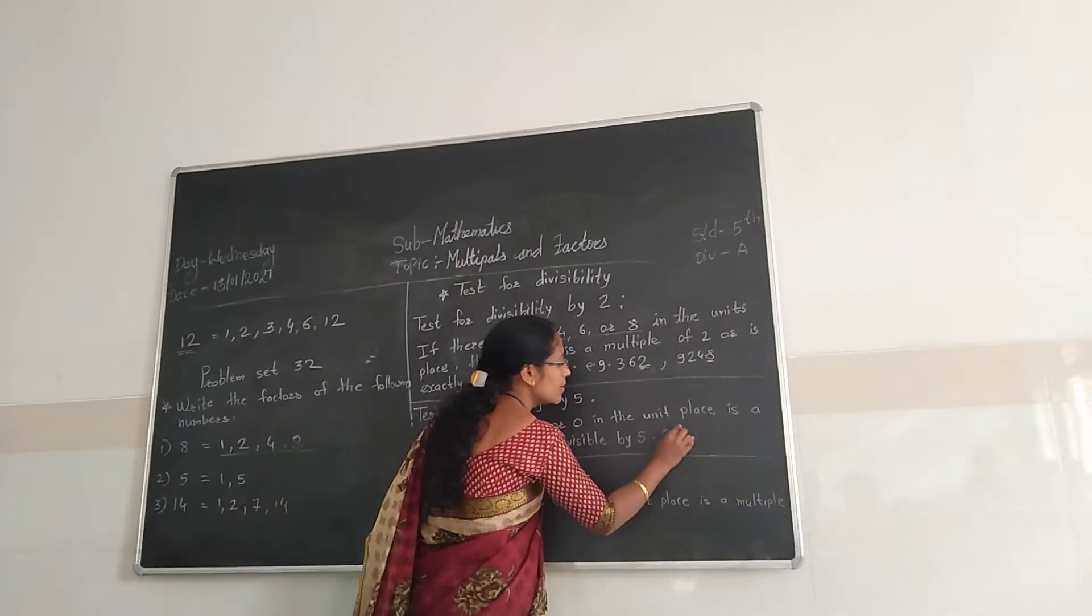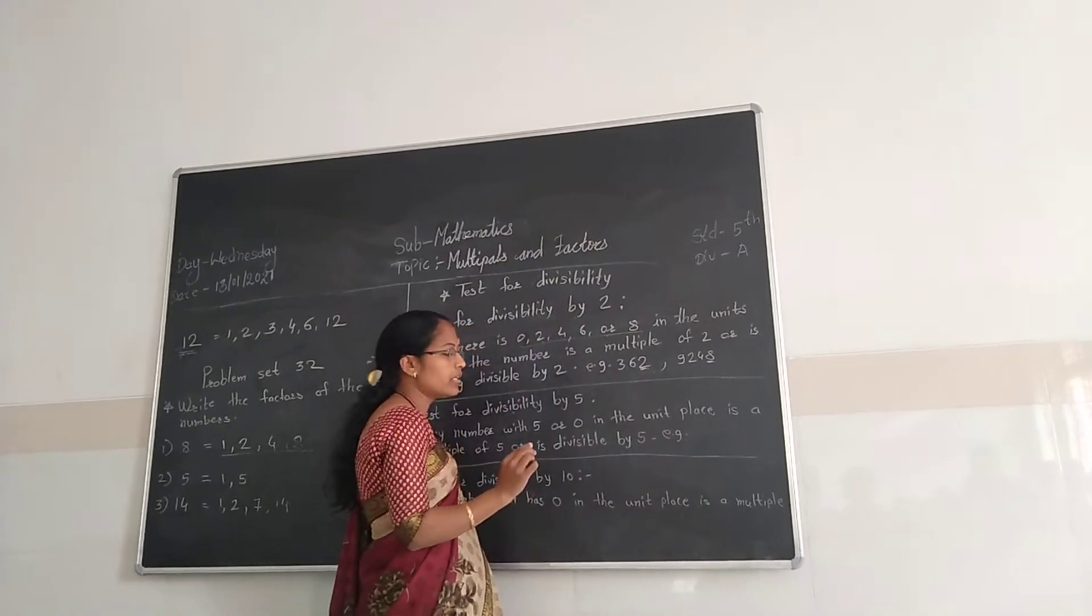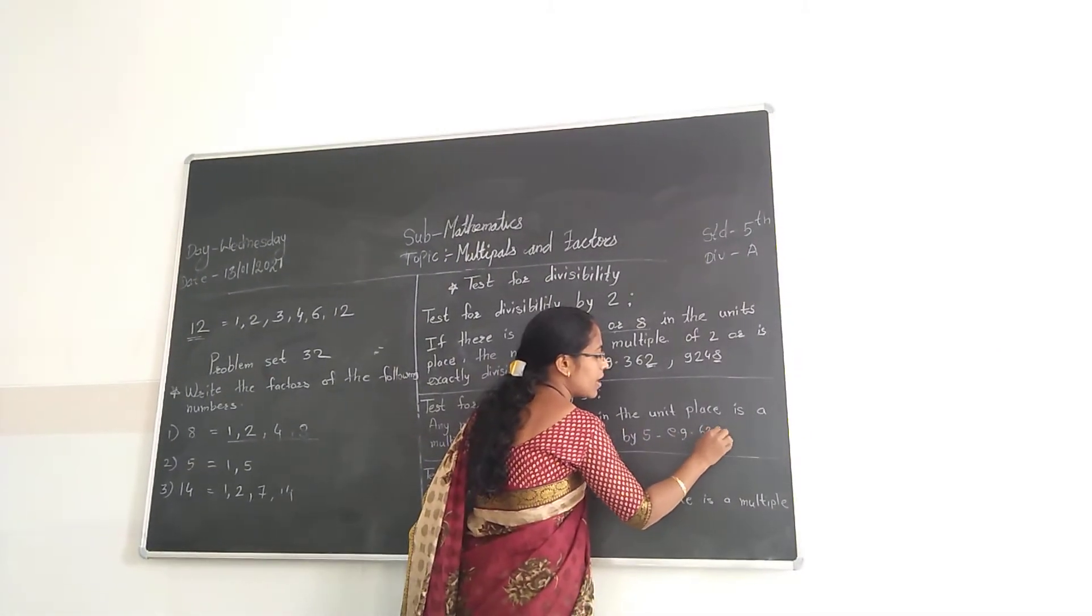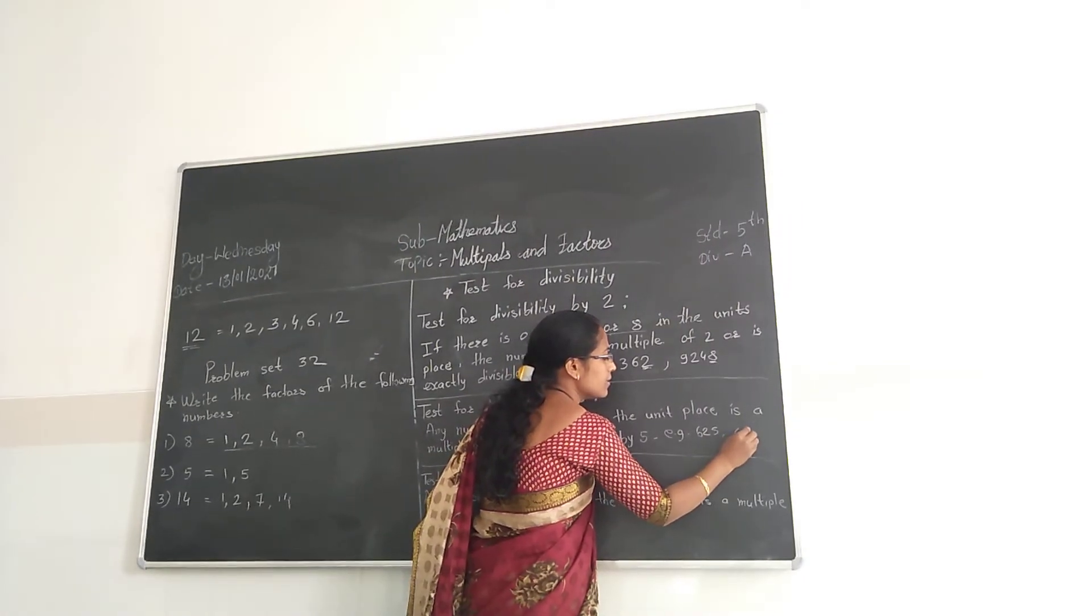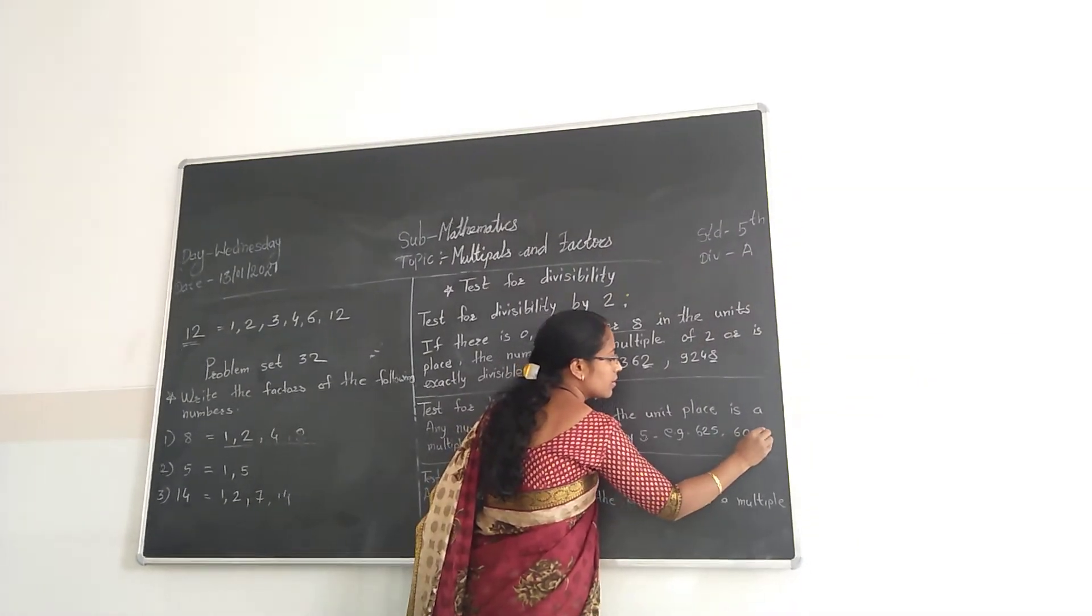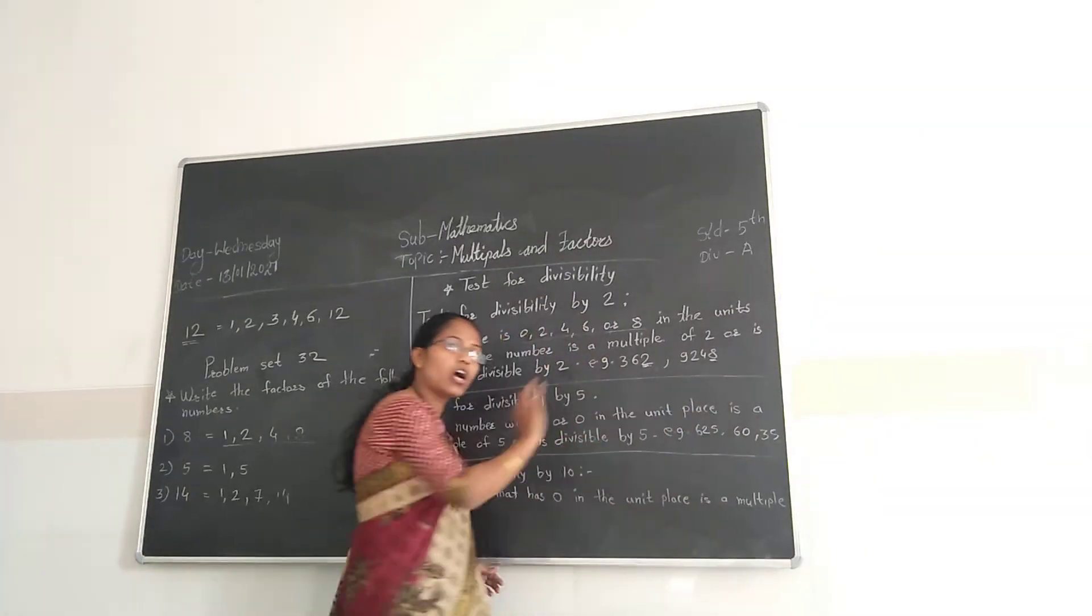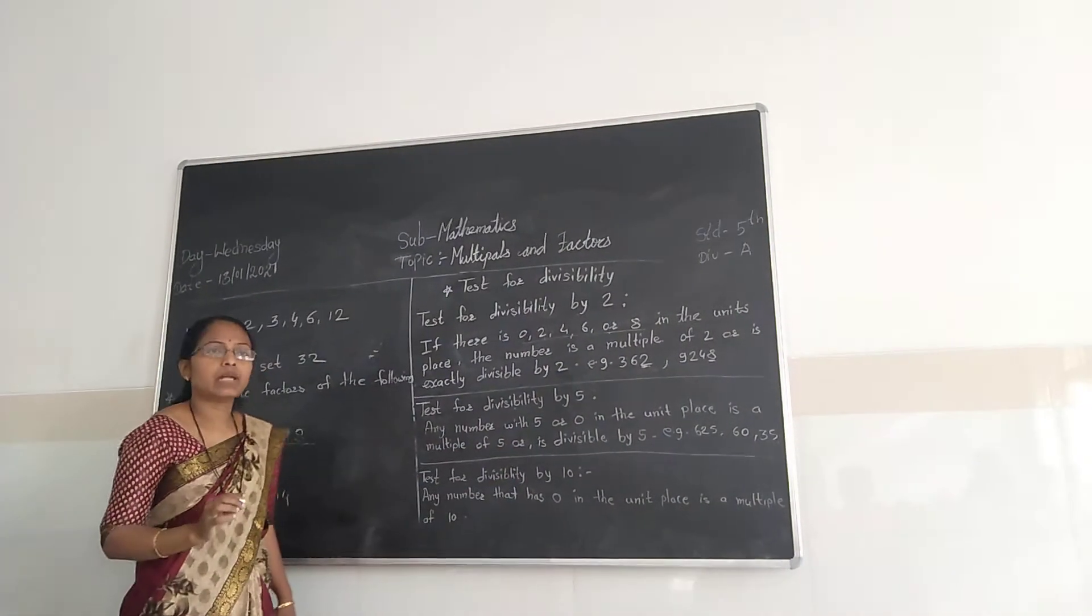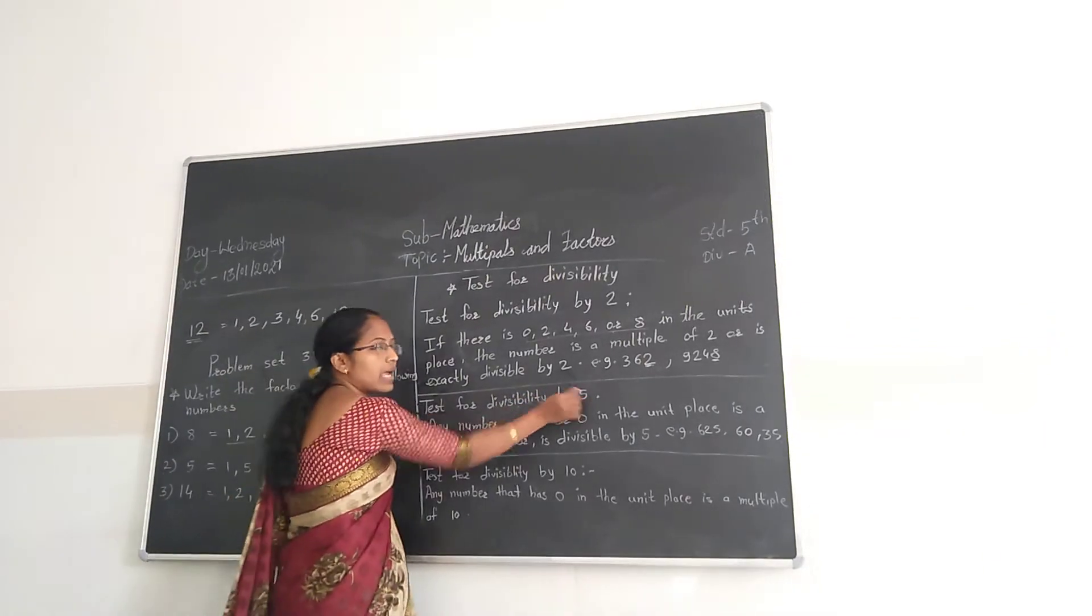For example, any number having 5 or 0 in the unit place: 625, 60, 35. Then all numbers having 0 or 5 in the unit place are divisible by 5. Understood?